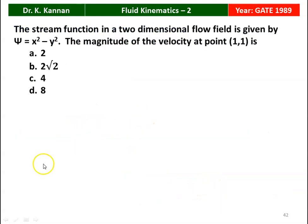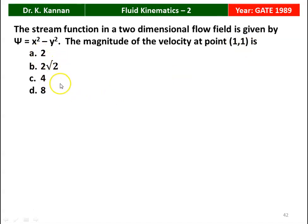The next question from the 1989 Question Paper: the stream function in a two-dimensional flow field is given by ψ = x² − y². The magnitude of the velocity at point (1, 1) is: options 2, 2√2, 4, and 8. The correct answer is option B, 2√2.